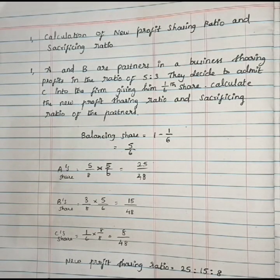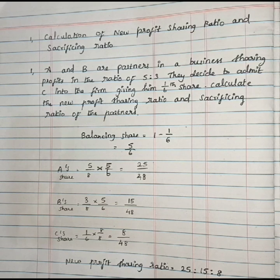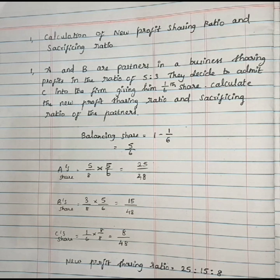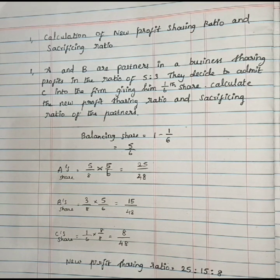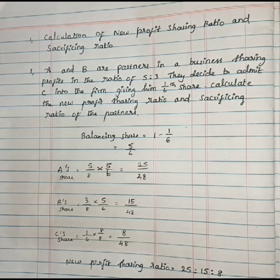A and B are partners in a business sharing profits in the ratio of 5:3. They decide to admit C into the firm, giving him a 1/6th share. We need to calculate the new profit sharing ratio and sacrificing ratio of the partners.